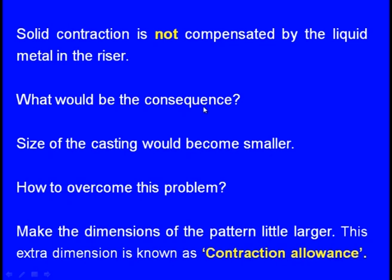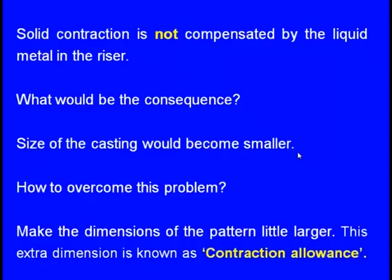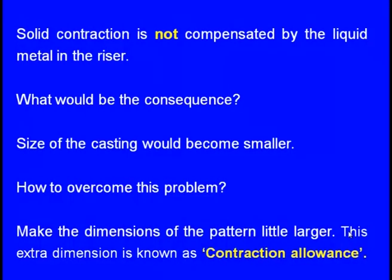Because of solid contraction, the size of the casting would become smaller than what we designed the pattern for. To overcome this, we make the dimensions of the pattern a little larger, so that after solid contraction is over, the final size of the casting equals the required size. This extra dimension given to the pattern is known as the contraction allowance or shrinkage allowance. This allowance is different for different materials.